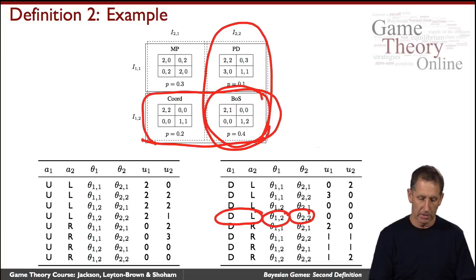And what is DL? DL means that we're playing down and left. So it would be this one. And therefore, the payoff will be correspondingly zero and zero.